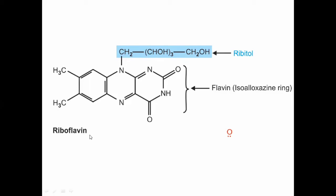Riboflavin is basically vitamin B2. Vitamin B2 is also known as riboflavin, and it is composed of flavin together with the ribitol, which is the sugar group. The flavin itself is composed of the isoalloxazine ring.